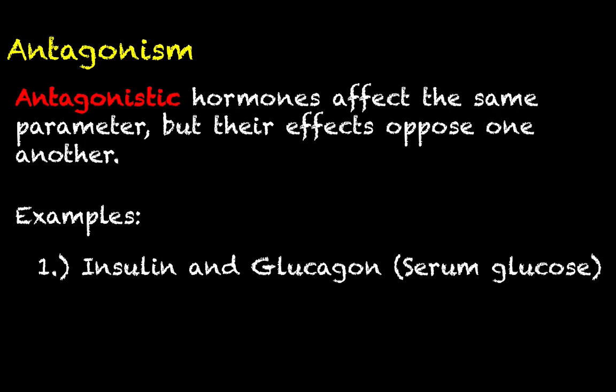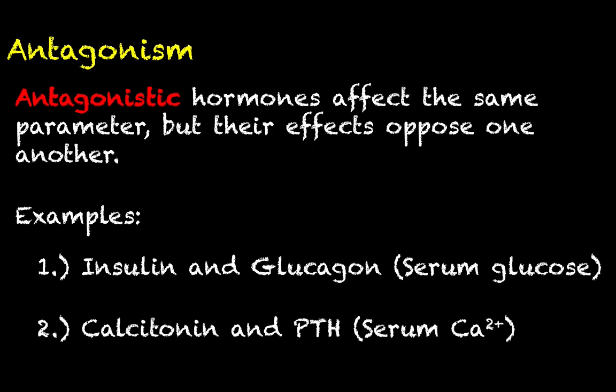The difference is that insulin makes your blood glucose go down and glucagon makes your blood glucose go up. That is why we call these antagonistic hormones — they are butting heads. Insulin wants to bring it down, glucagon wants to bring it up. This is clearly different from the synergistic hormones cortisol, glucagon, and epinephrine, which all wanted to increase blood glucose, whereas insulin and glucagon want to change it in different ways.